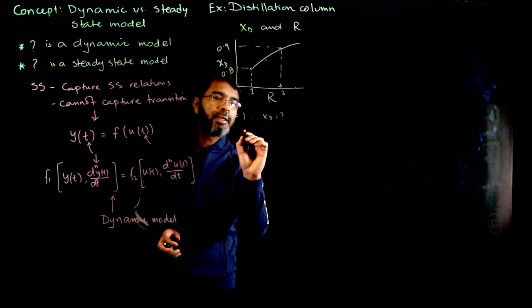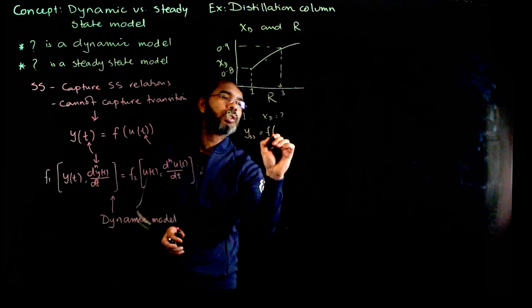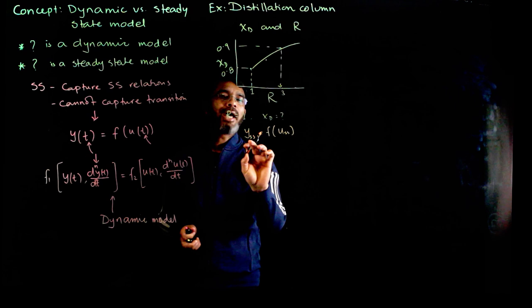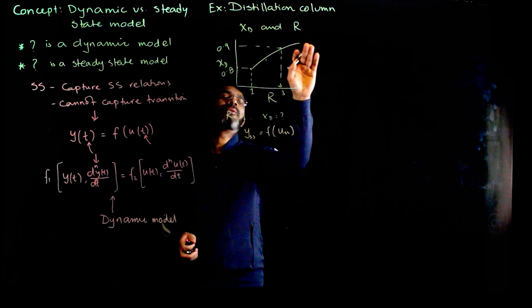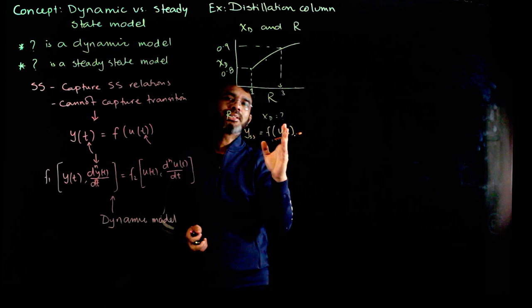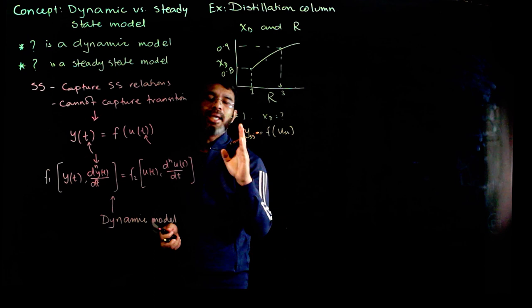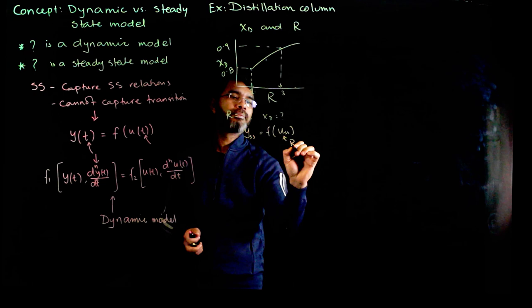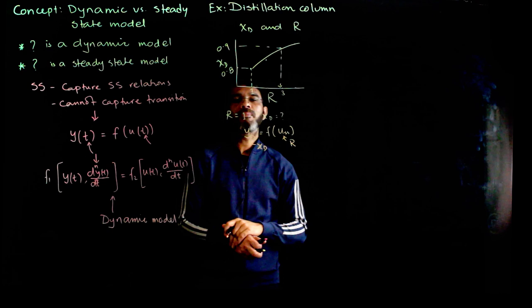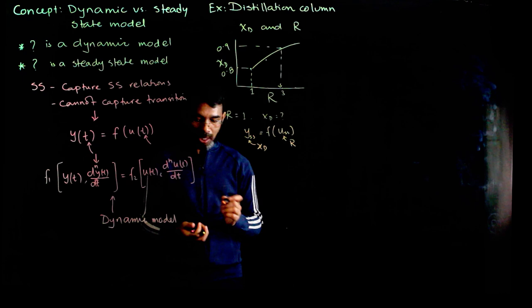The steady state model gives the relation between y at steady state as a function of u at steady state — a polynomial or similar equation relating the steady state values. We consistently use y for output and u for input; in this case u is r (reflux) and y is xd (top composition).